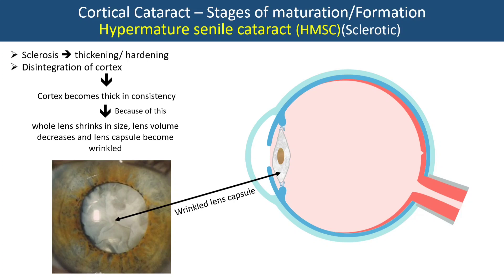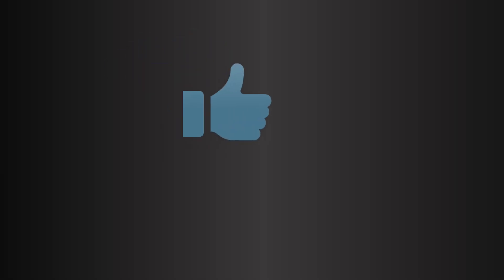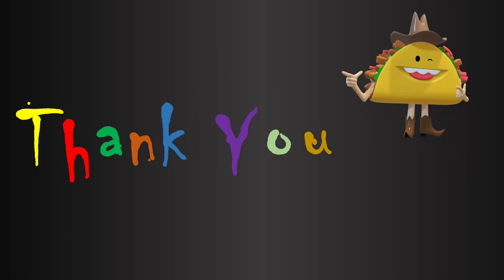And here we are done with cortical cataract — stages of cortical maturation, symptoms, signs, clinical features, and complications. In the next video we will see another type of acquired cataract. Thank you for watching.